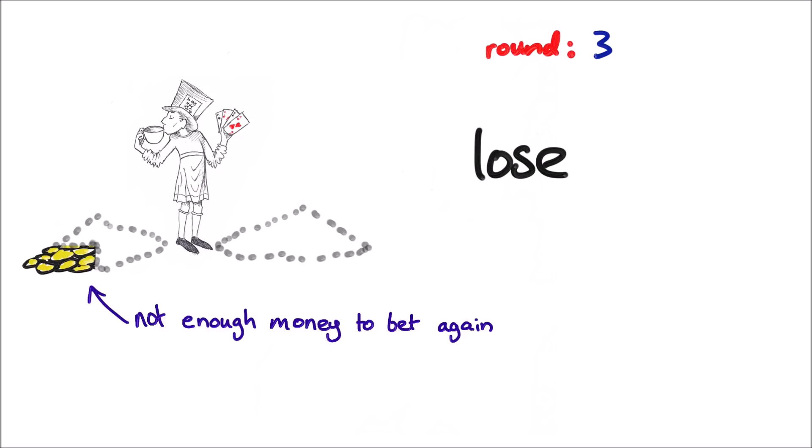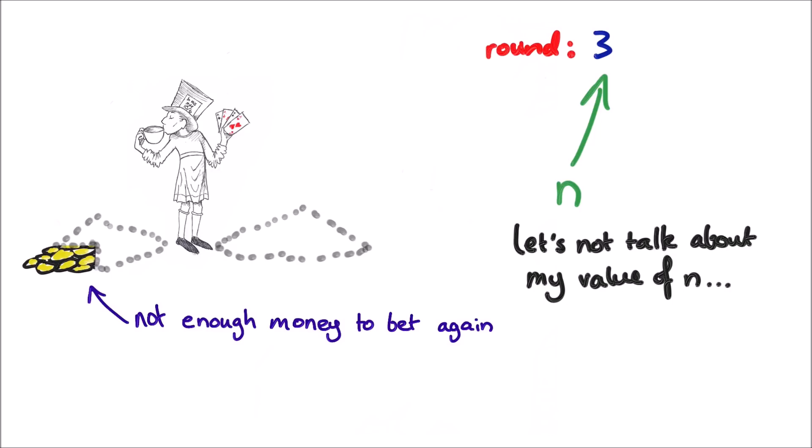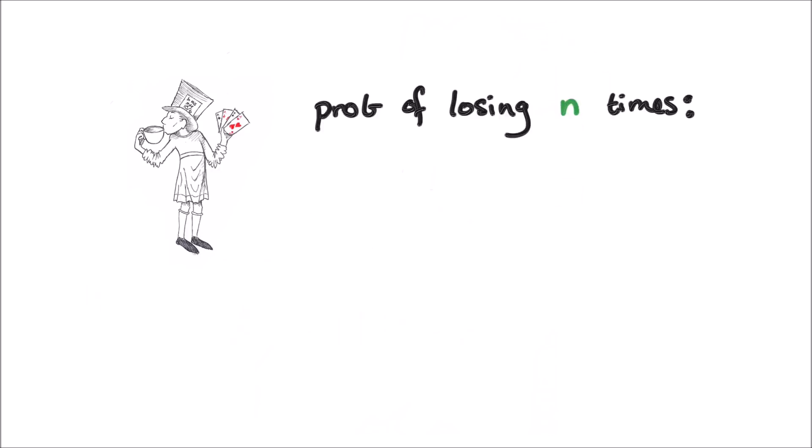Let's call this number of losses for a particular person n. N can be very high or very low, it doesn't matter. The person only has a one in two to the n chance of losing this maximum n times in a row.